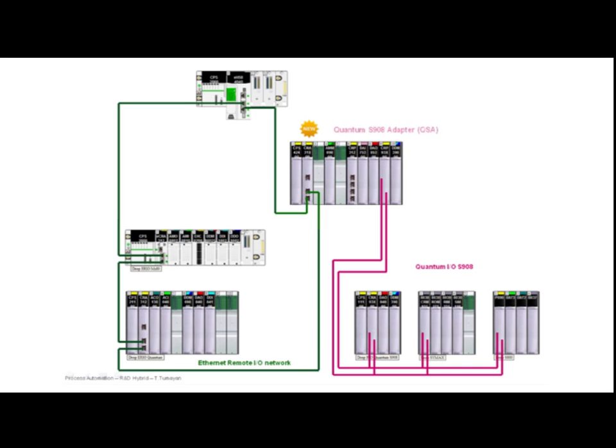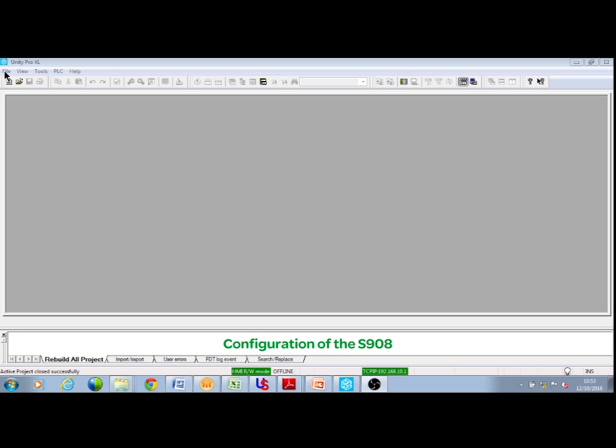The Quantum S908 adapter, known as the QSA, must be used to connect the Quantum drop that supports the S908 head, the CRP, to Ethernet IO. Note that all existing Quantum, Symax, and 800 series drops and IO modules are supported. Let's take a look at how to configure it in Unity Pro.